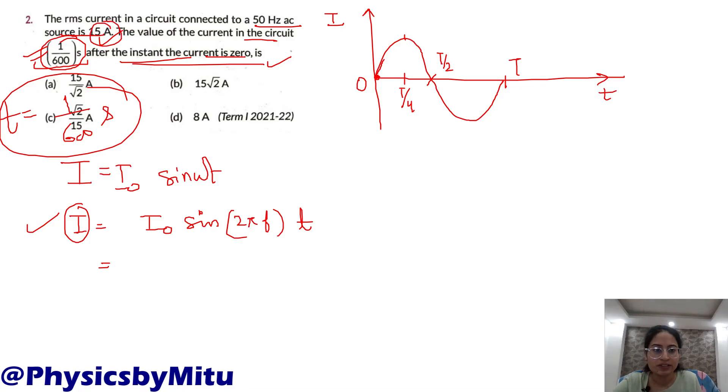I RMS is given as 15 ampere. What is relationship between I RMS and I naught? I RMS is I naught upon root 2, so I naught is 15 root 2.